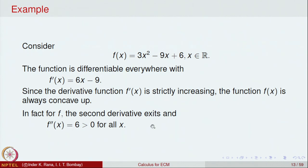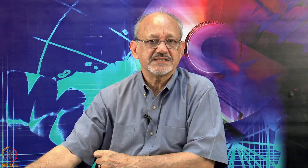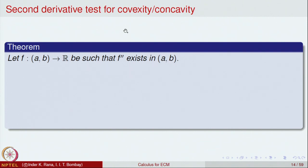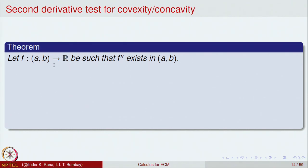Either way we can conclude that this function is concave up because its derivative is strictly increasing. The second derivative test could also be applied — this motivates the second derivative test for convexity and concavity. Note: concave up is also called convex, and concave down is normally just called concave. Let f be a function on an open interval (a, b) such that its second derivative exists throughout (a, b).